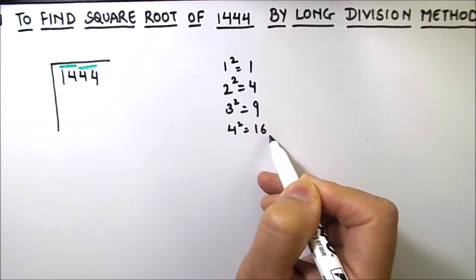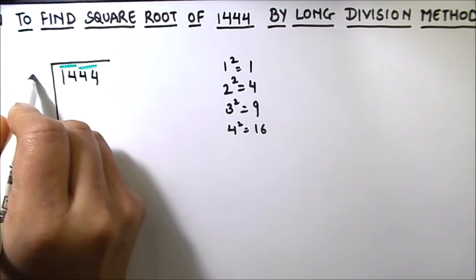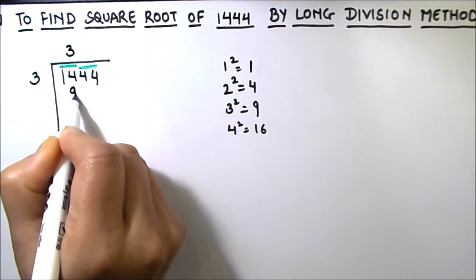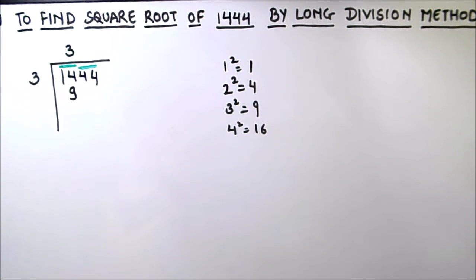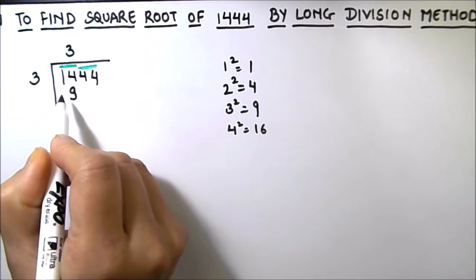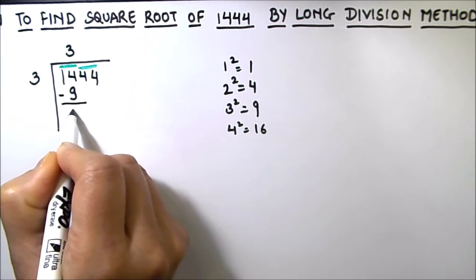4 squared will be bigger than 14. So we are going to use 3 as our first divisor. So 3 times 3 is equal to 9. You have to keep in mind that you always take a square number because you have to multiply with the same number. So this is 9, 14 minus 9 is 5.